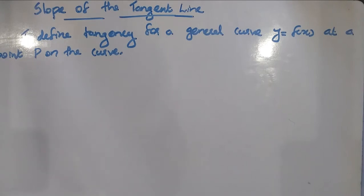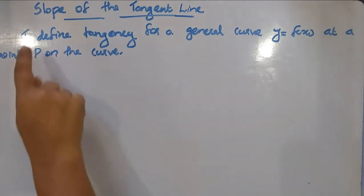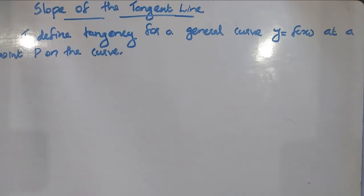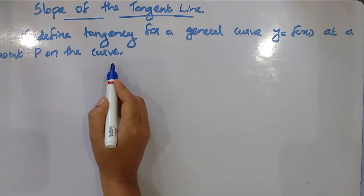Today we will discuss the slope of the tangent line. We will discuss a curve — the curve is tangent at point P. To define tangency for a general curve y = f(x), we consider a point P on the curve.